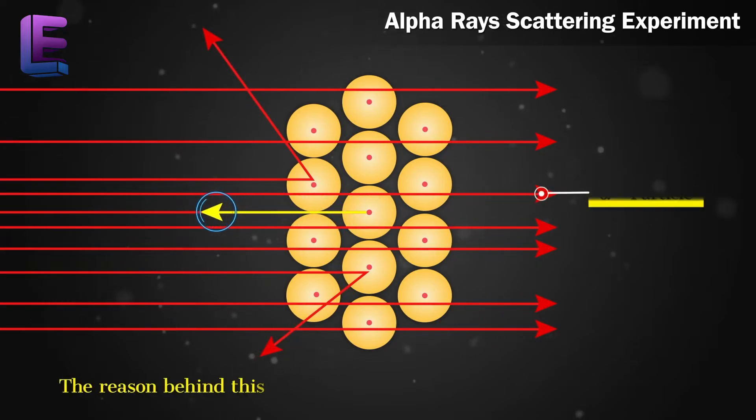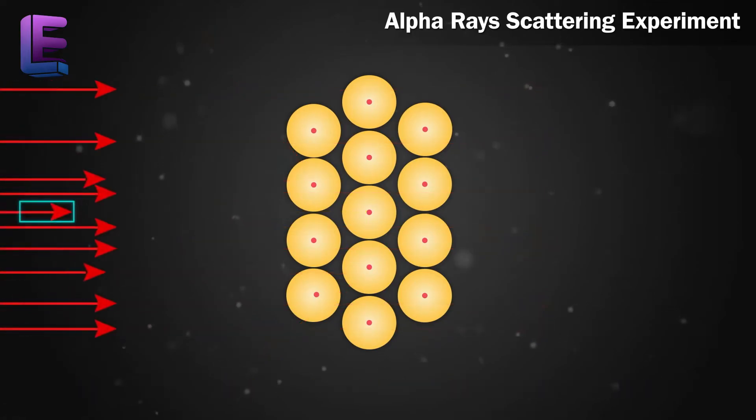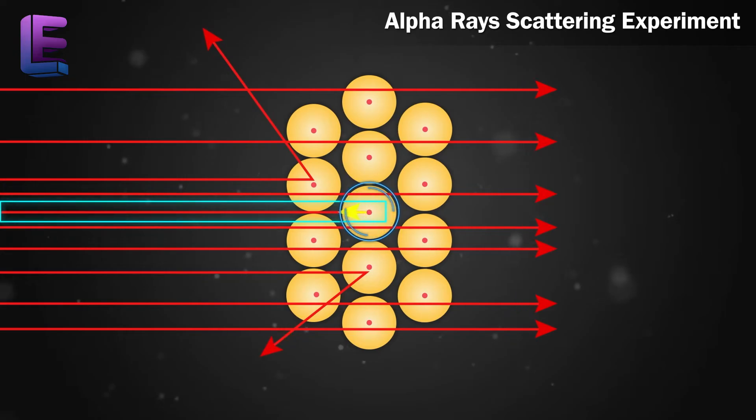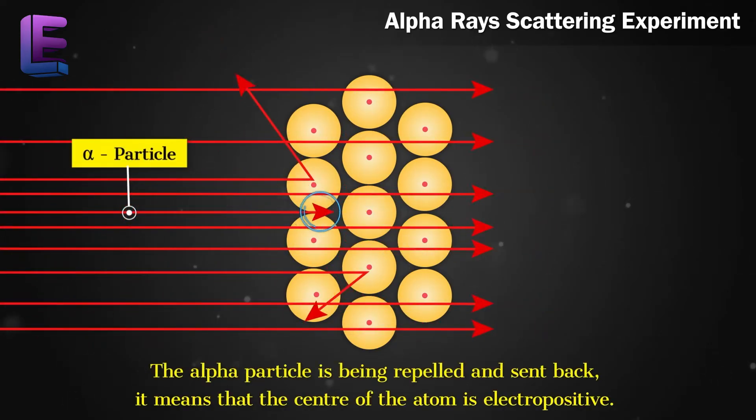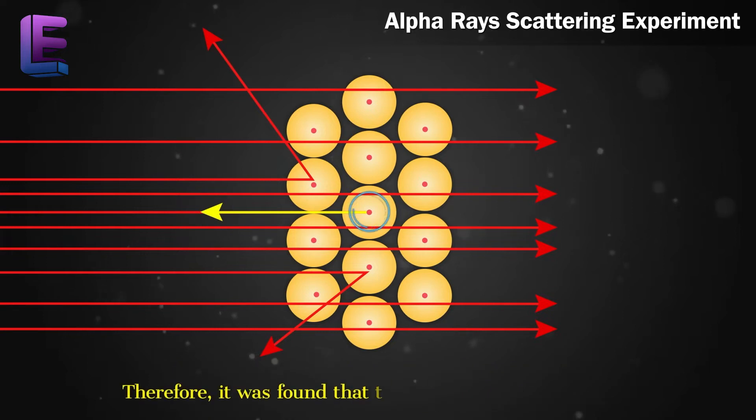The reason behind this was the electropositivity of the alpha particles. As they neared the center of the atom in the gold foil, they were repelled and sent backwards. In reality, alpha particles are electropositive. If the alpha particle is being repelled and sent back, it means that the center of the atom is electropositive. Therefore, it was found that the nucleus is electropositive.